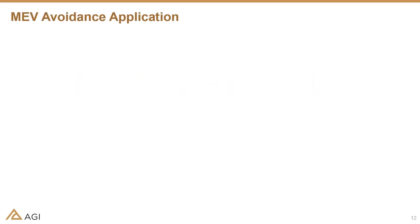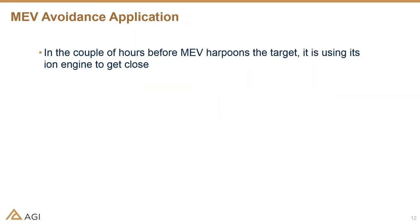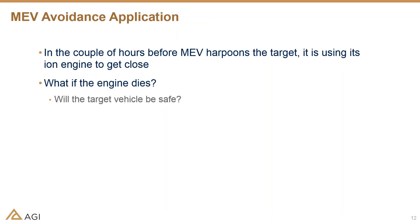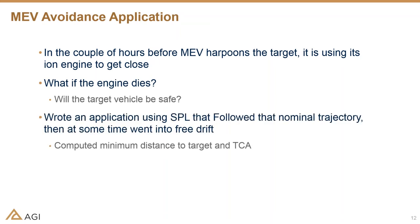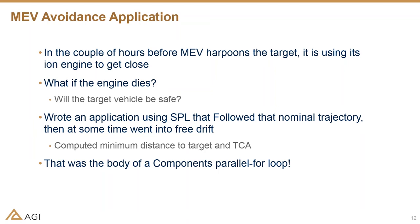There was also the MEV avoidance application, where a couple of hours before the MEV docks with its target, it's using thrusters to get close. But what if that engine dies — will the target vehicle be safe? Using the Segment Propagation Library, we followed the nominal trajectory up until a certain point in time, then did normal free-drift with no thrusting, just a simple propagate segment. From that, we computed the minimum distance and time of closest approach. Using components, this could be done in a parallel for loop, using all threads on the machine to compute very quickly across a range of times from the start of approach up until a couple minutes before actual docking.